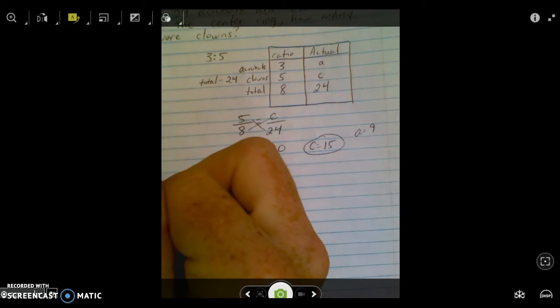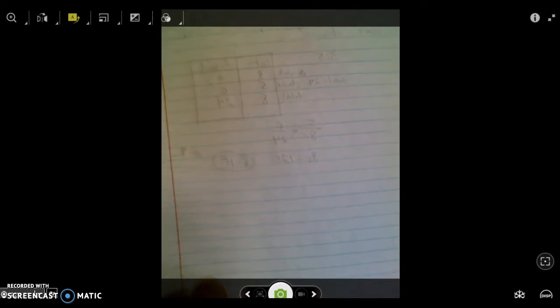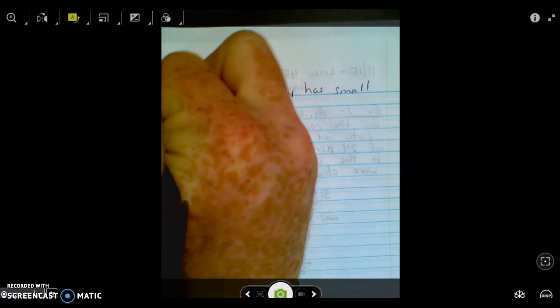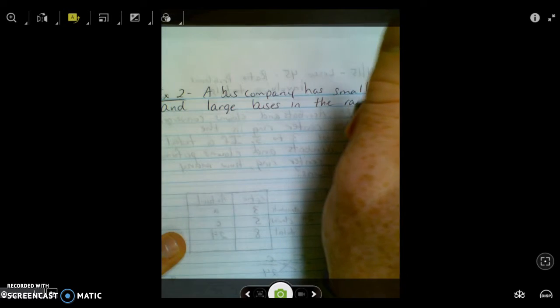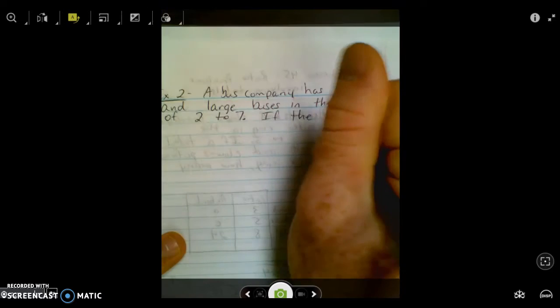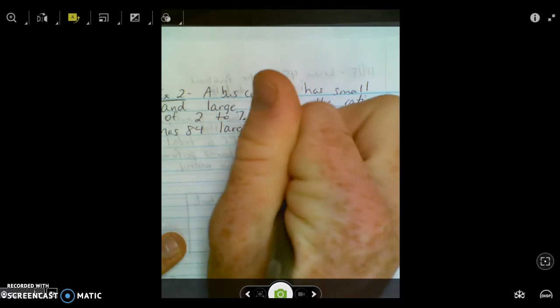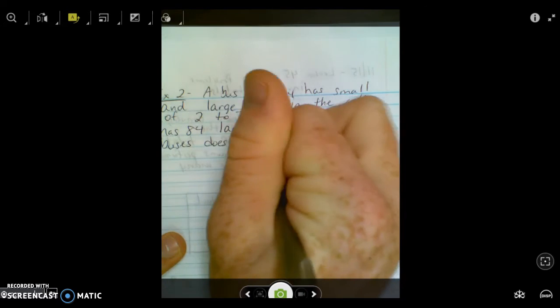All right, that's the next example, and the final example. Example two. A bus company has small and large buses in the ratio two to seven. If the company has 84 large buses, how many does it have total?